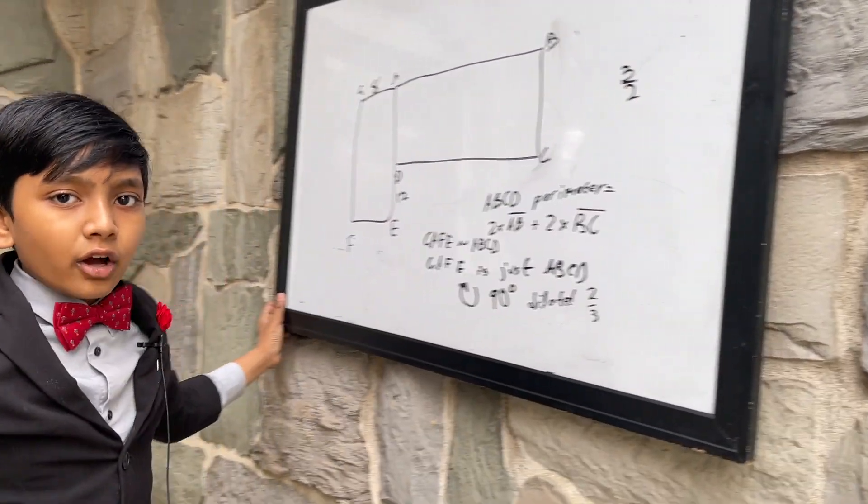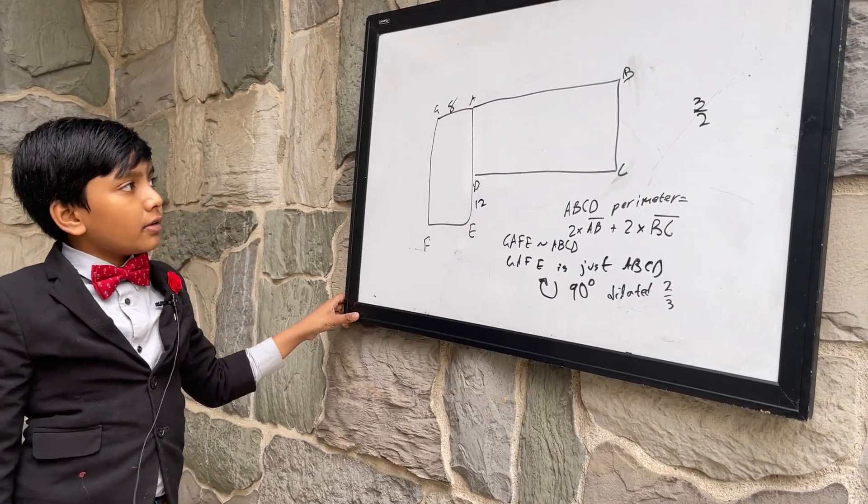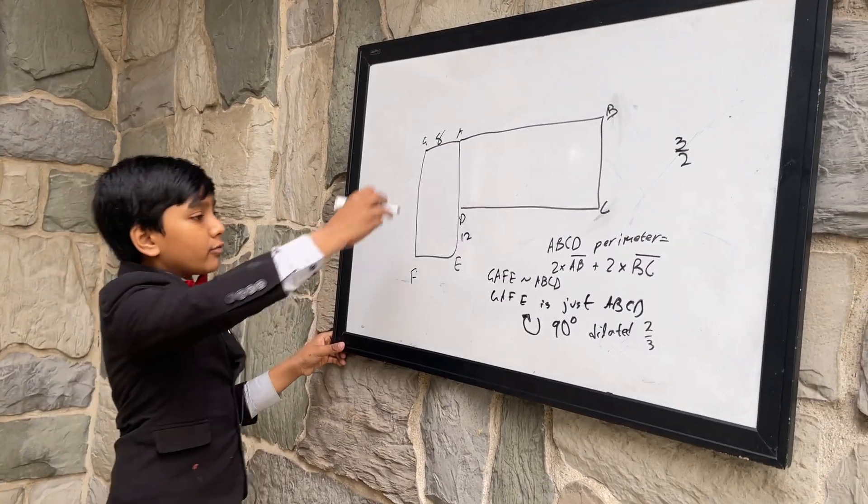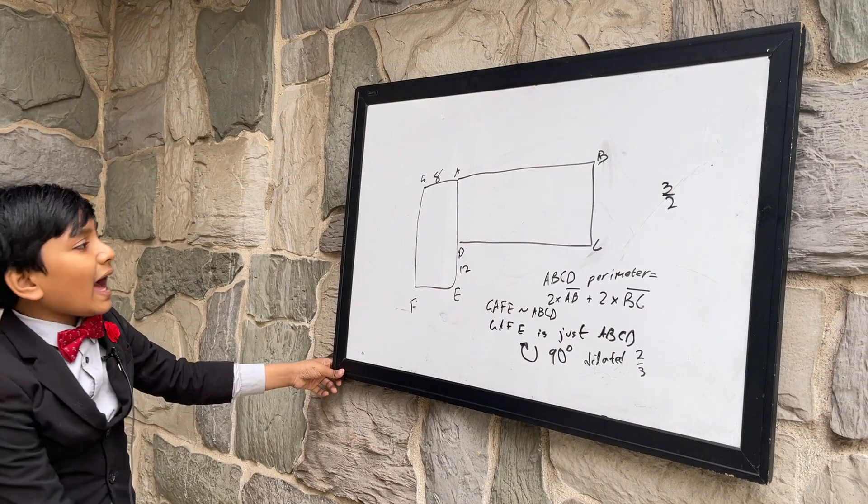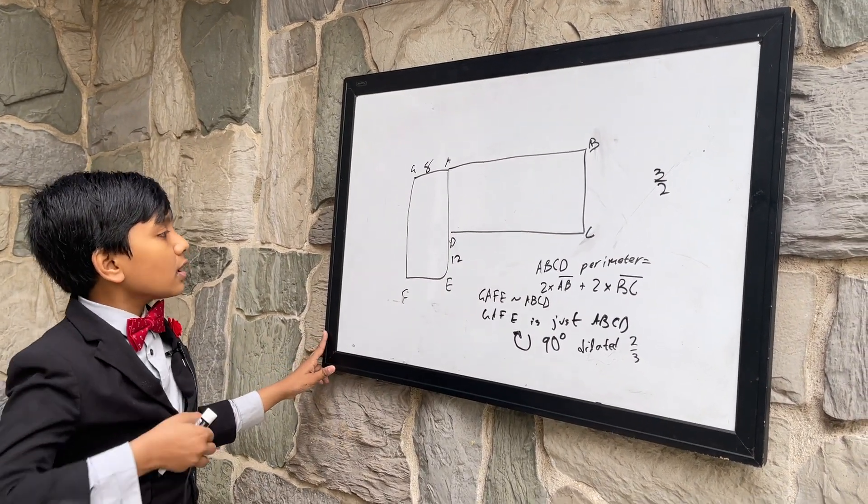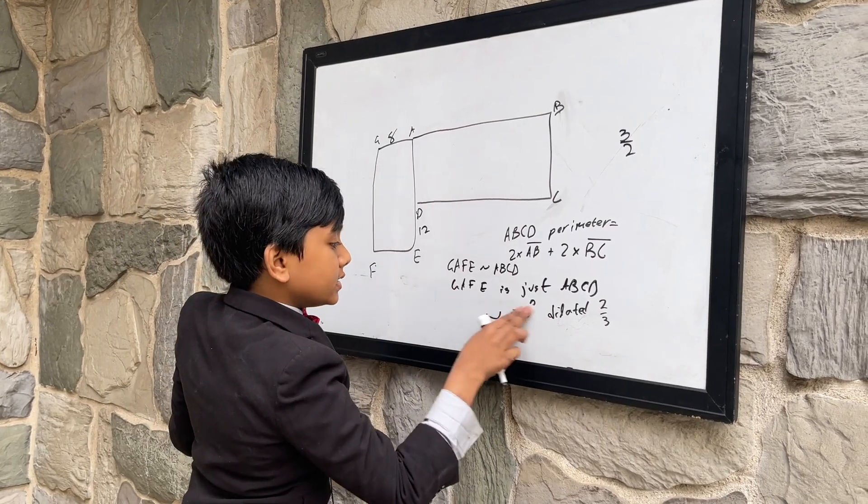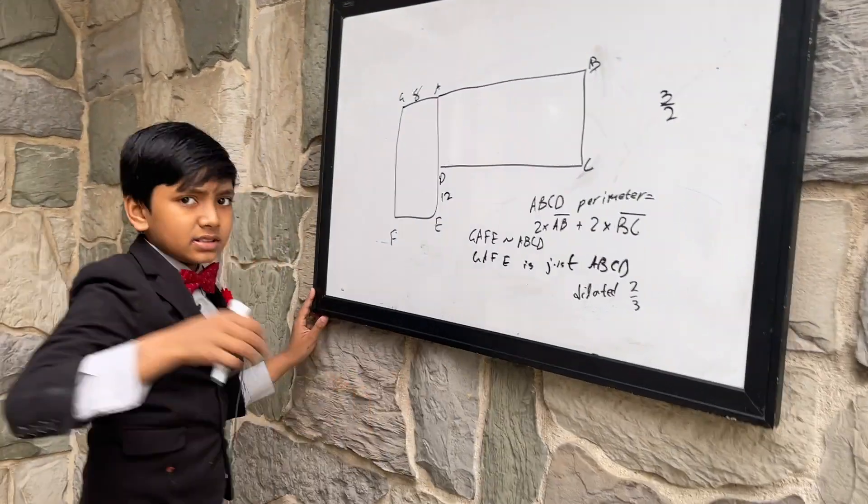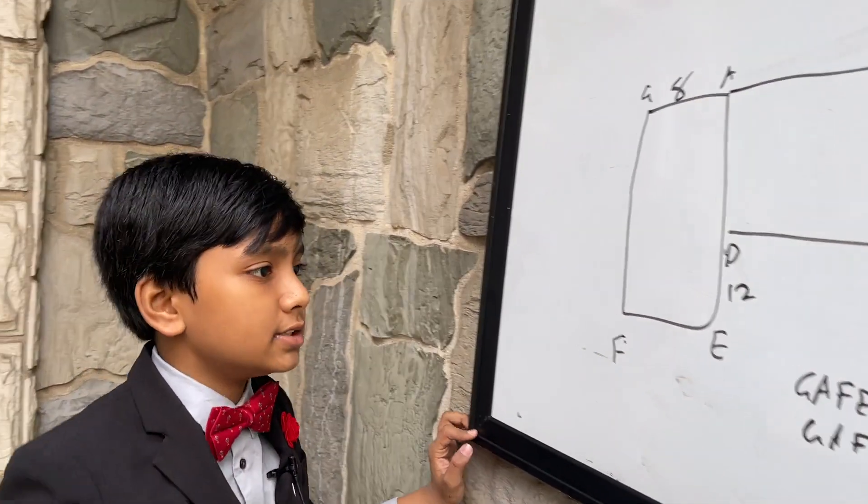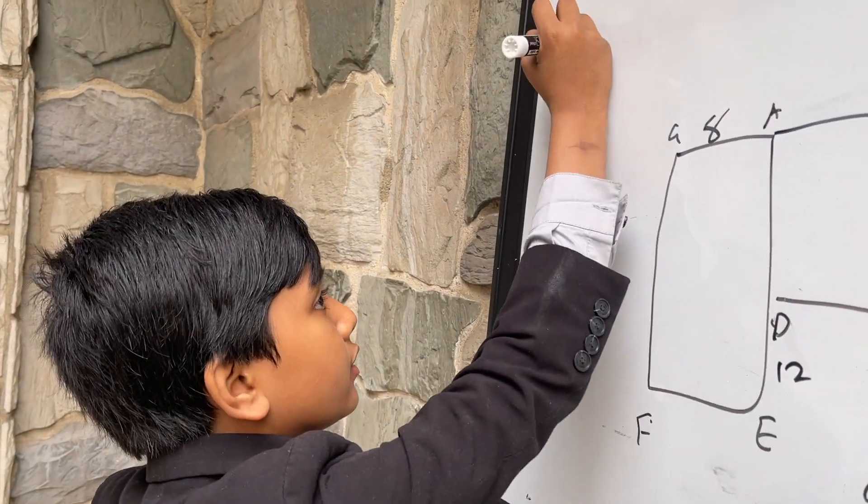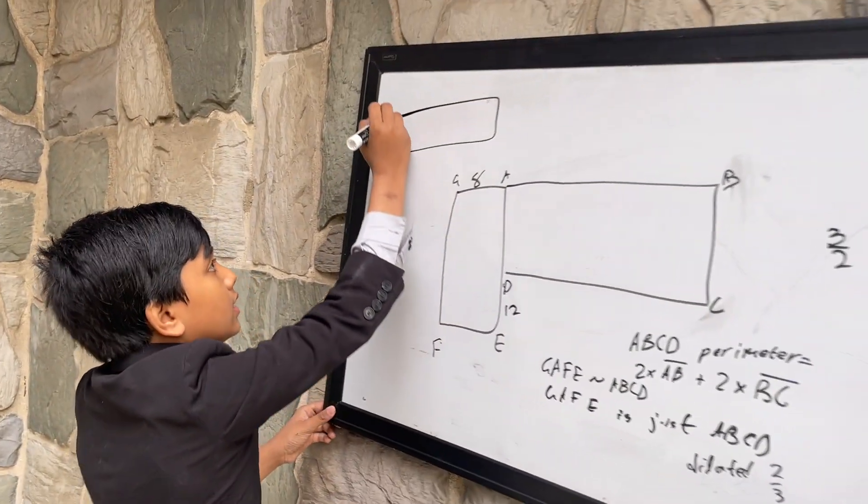So, in order to find all of our corresponding sides, we first have to multiply our original sides by three-halves. So, first, let's un-rotate GAFE. Just erase this first thing because that transformation is a nuisance just made to disorient you.